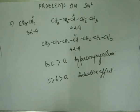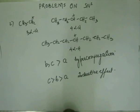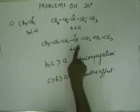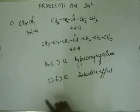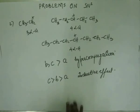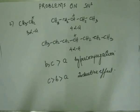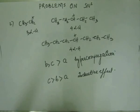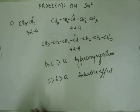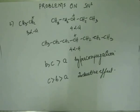Alright. So in SN1, whenever we are dealing with SN1, you have to bear in mind that what we deal with is the stability of the intermediate — the stability of the carbocation formed as an intermediate during the RDS. That will decide the rate, because that is the toughest step to be crossed. The substrate for which that step is crossed most easily will give the highest rate of reaction via SN1.